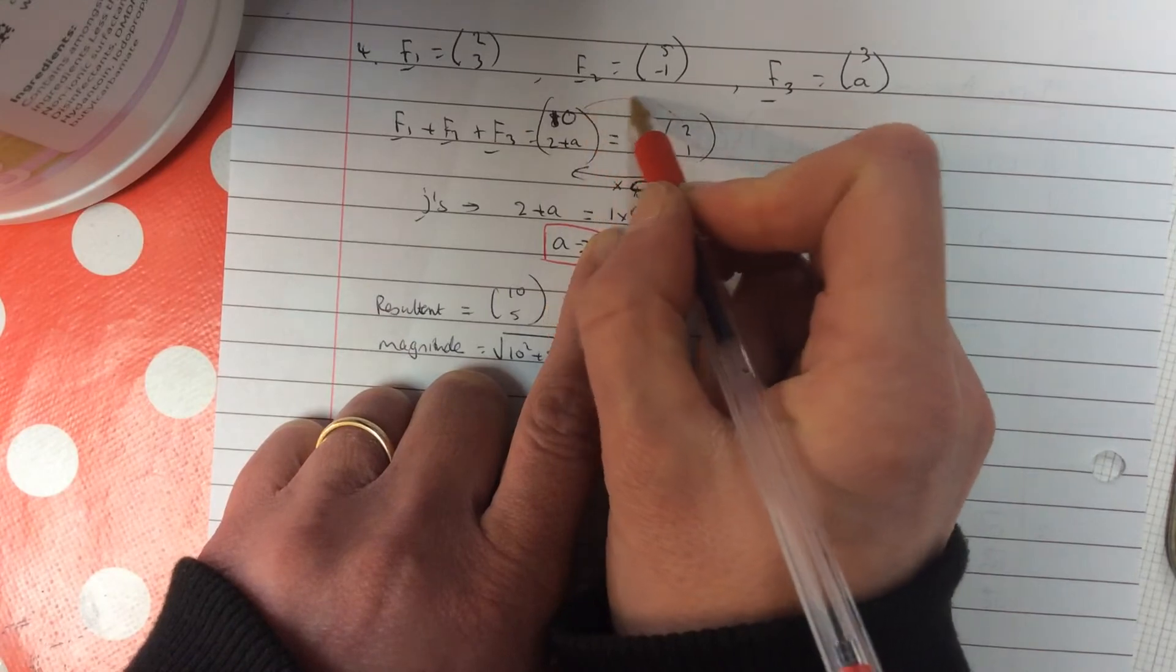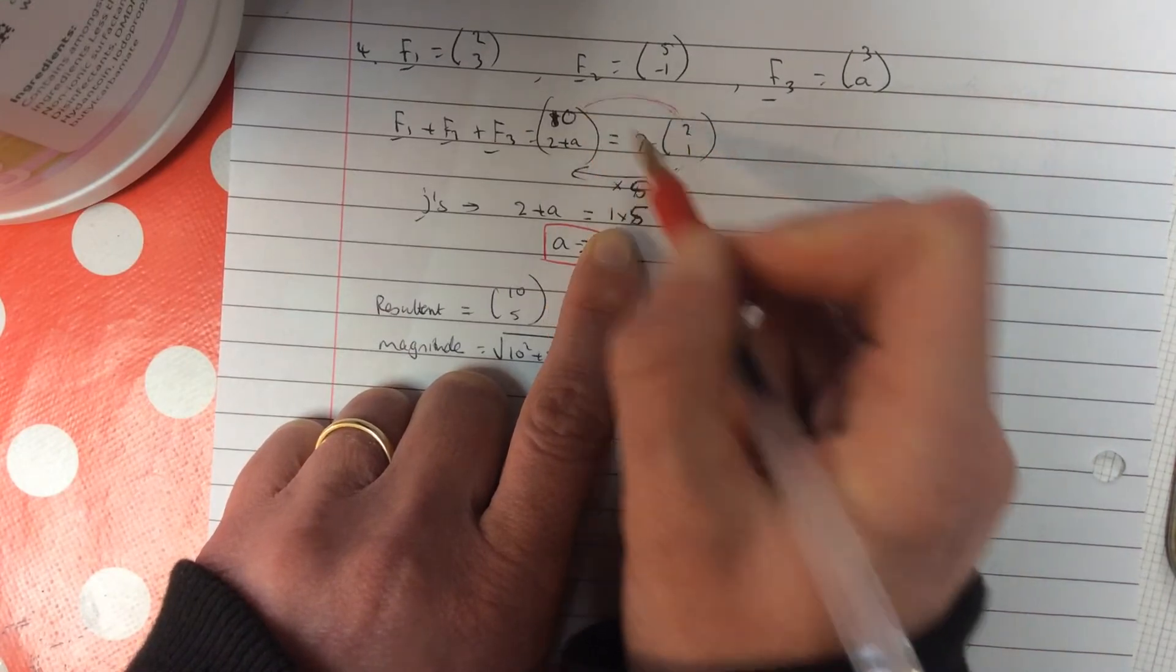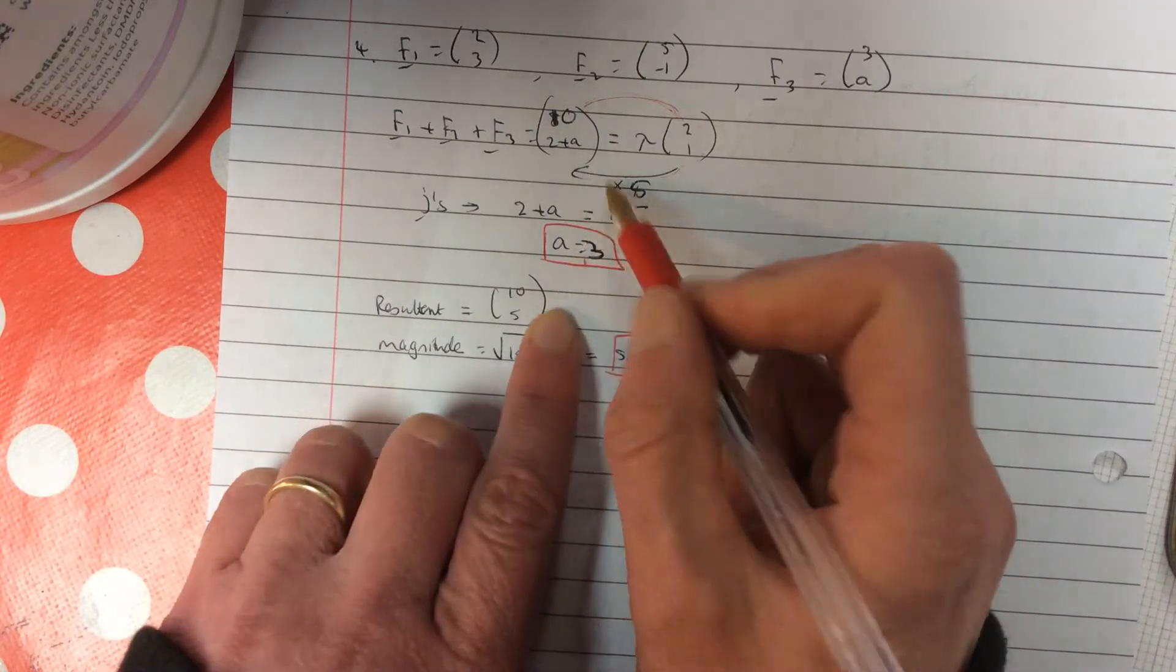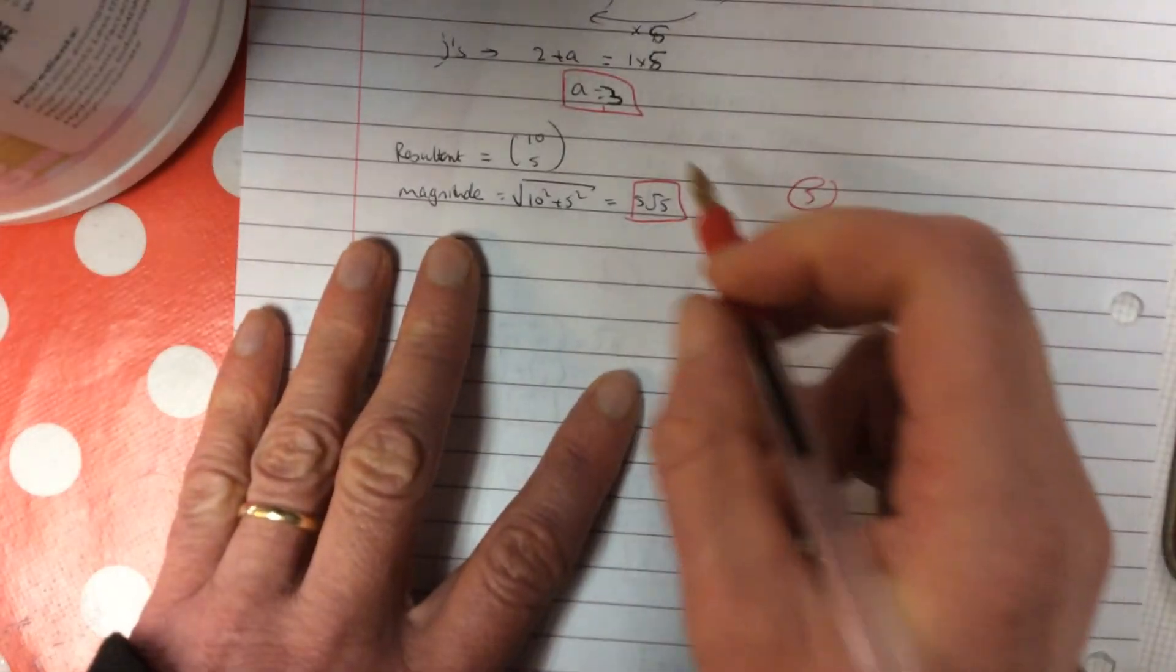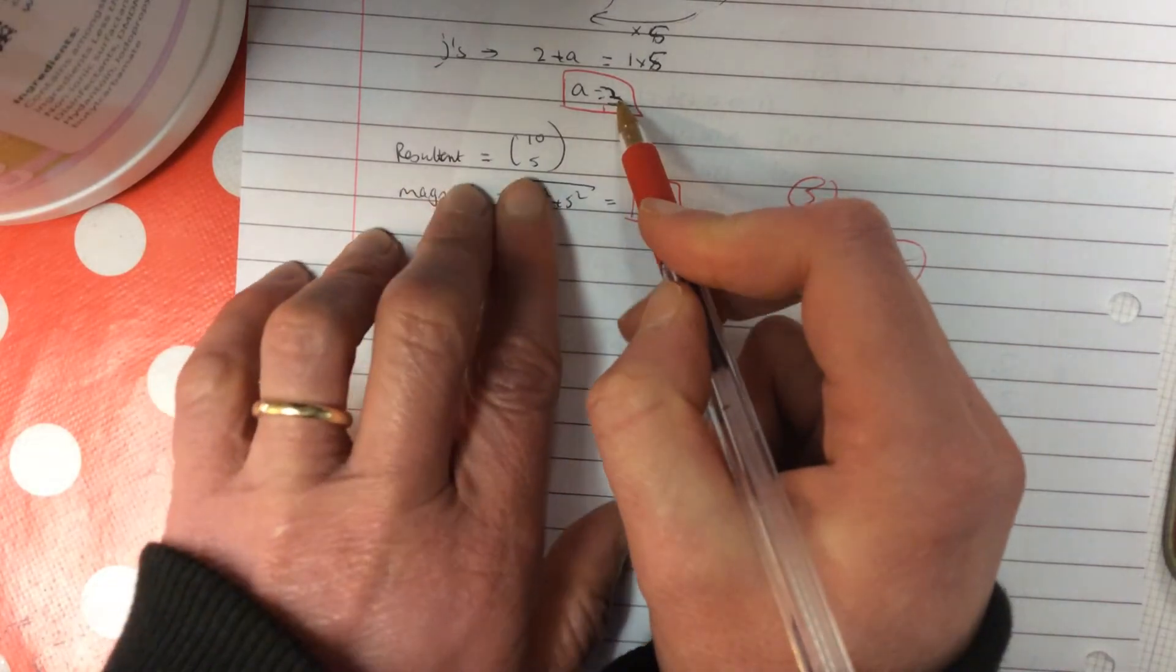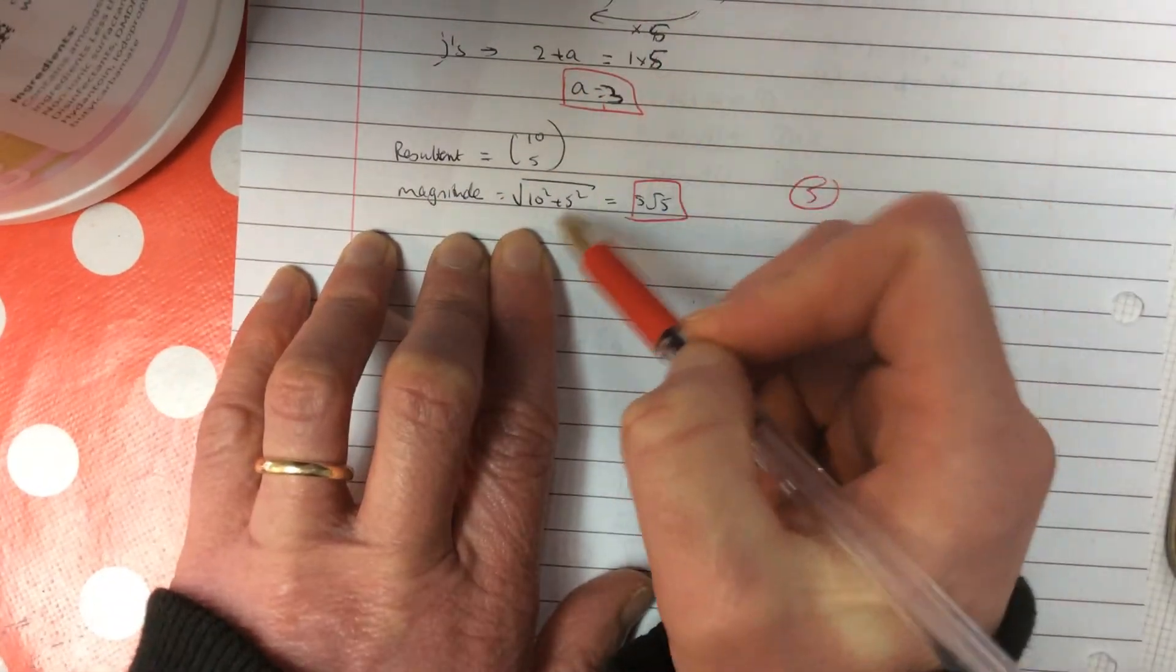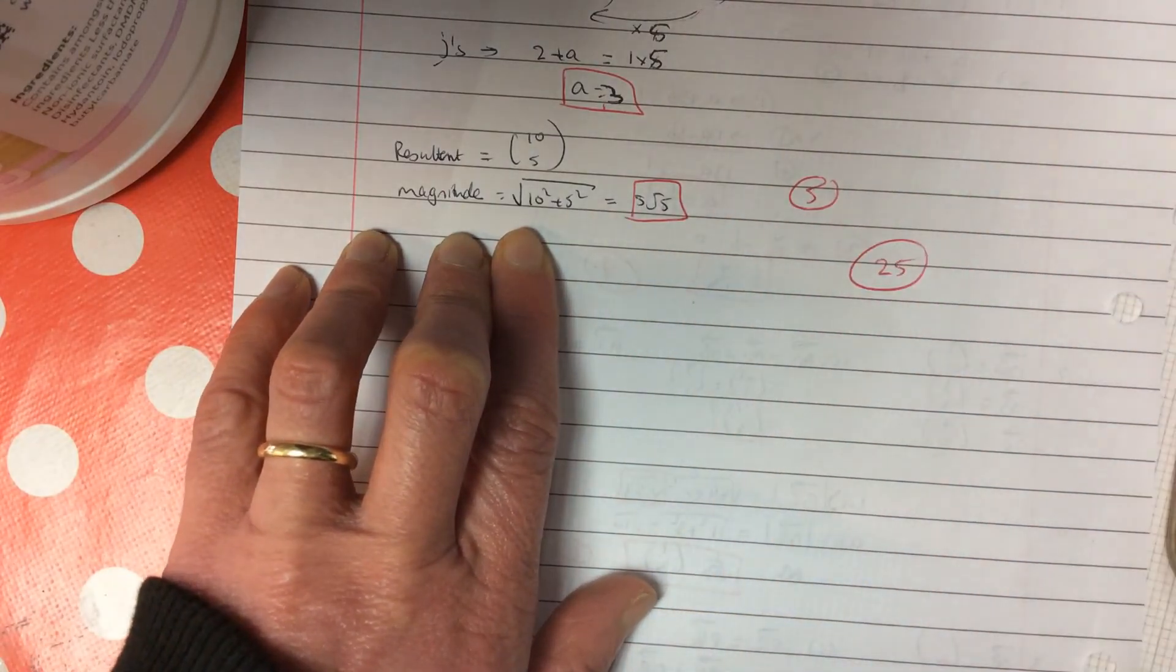Do you see what's happened? Look. This one's been divided by 5. So, times by 5 to go back. Just to match this up. You then work out that your A is going to be a 3. Okay. Then you can work out the resultant 10. And that's a 5. And then the magnitude is your Pythagoras theorem.